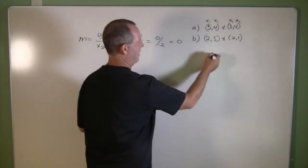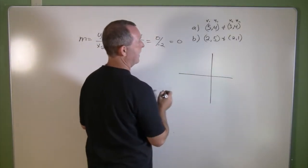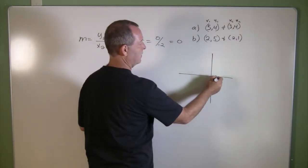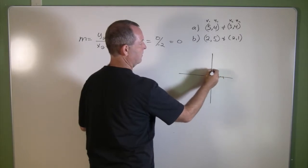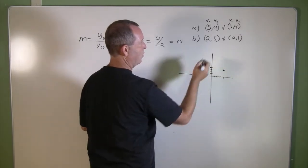Well, let's graph that out and let's get an idea. I have the point 5 and 4. I have the point 3 and 4.